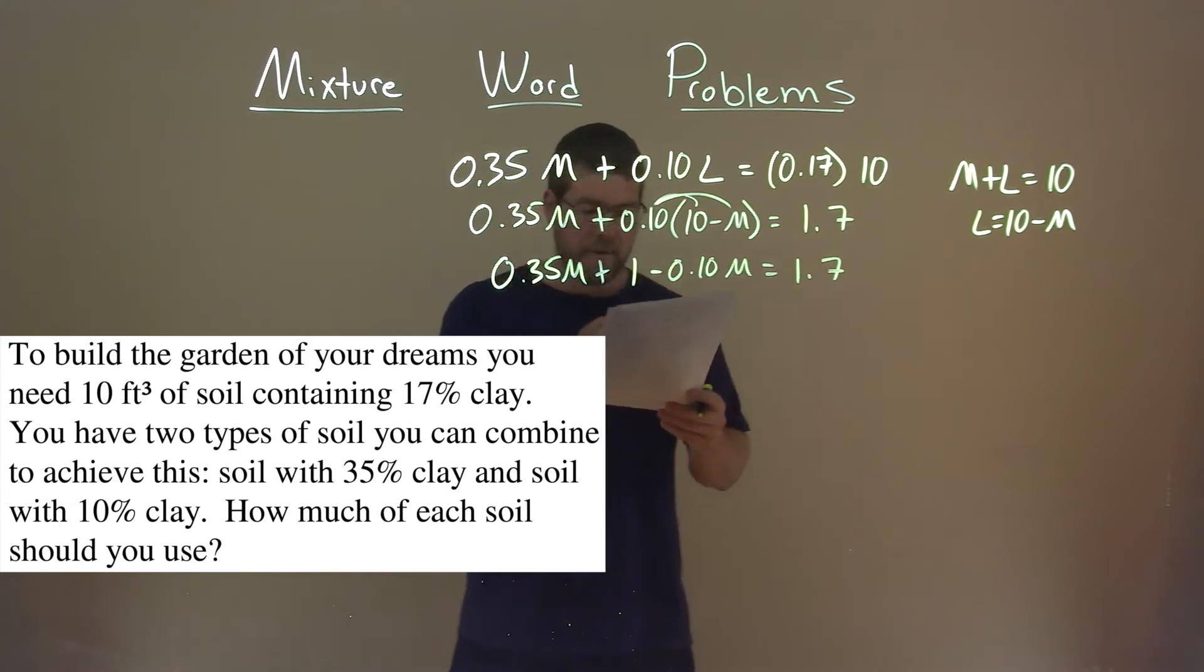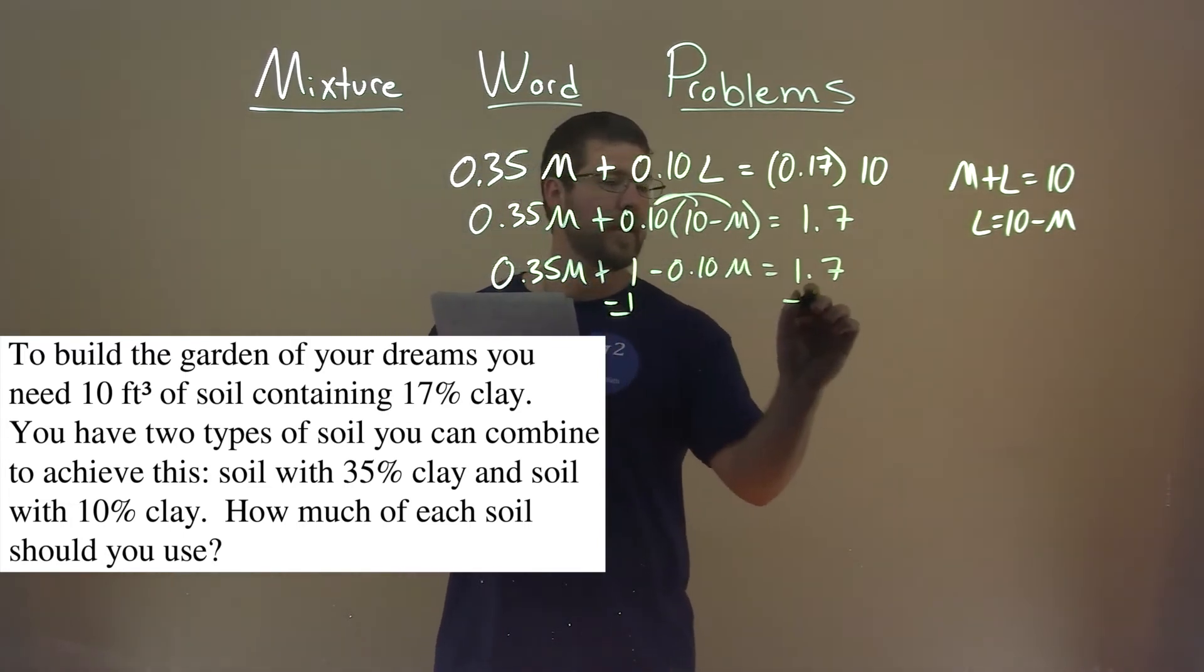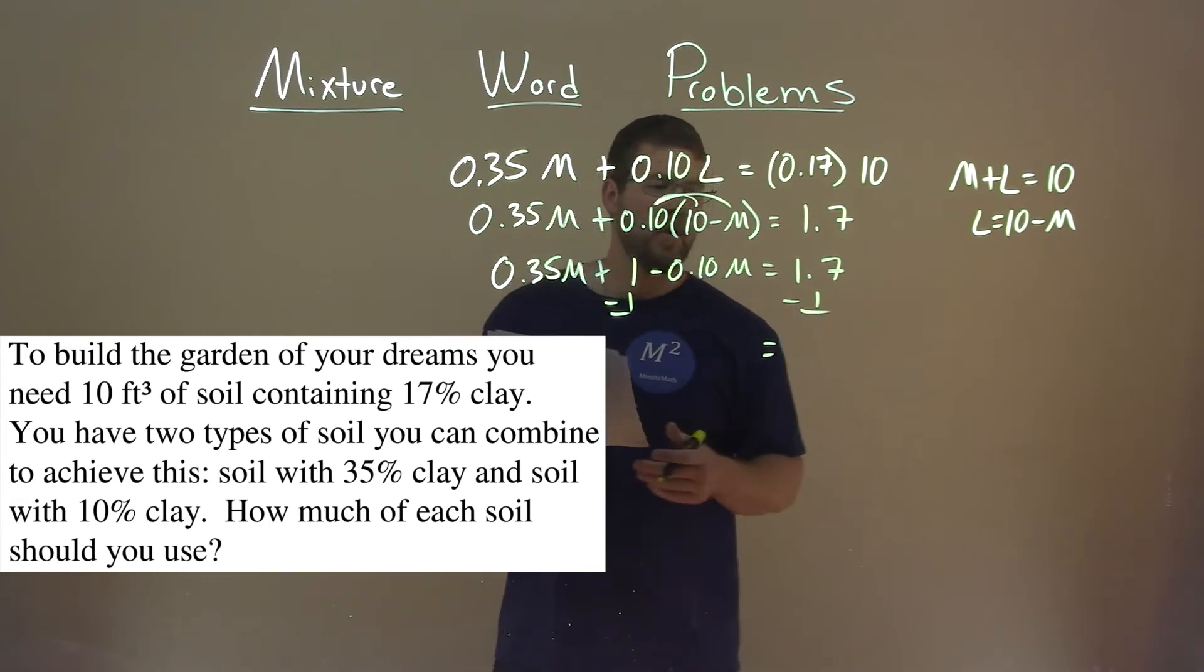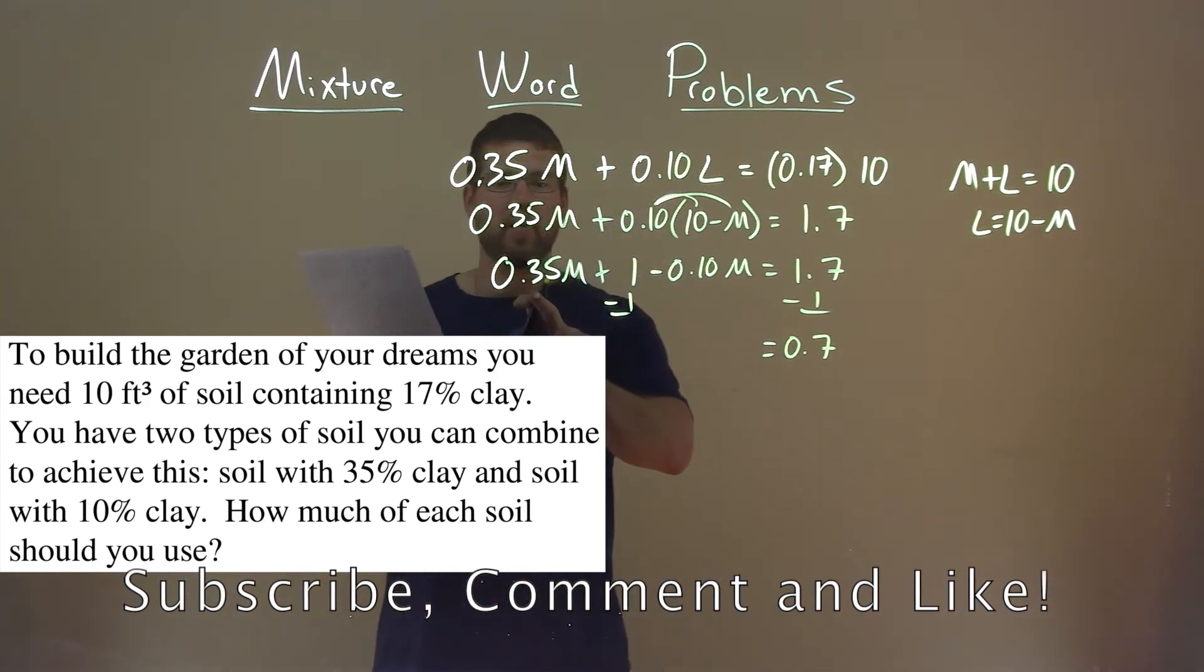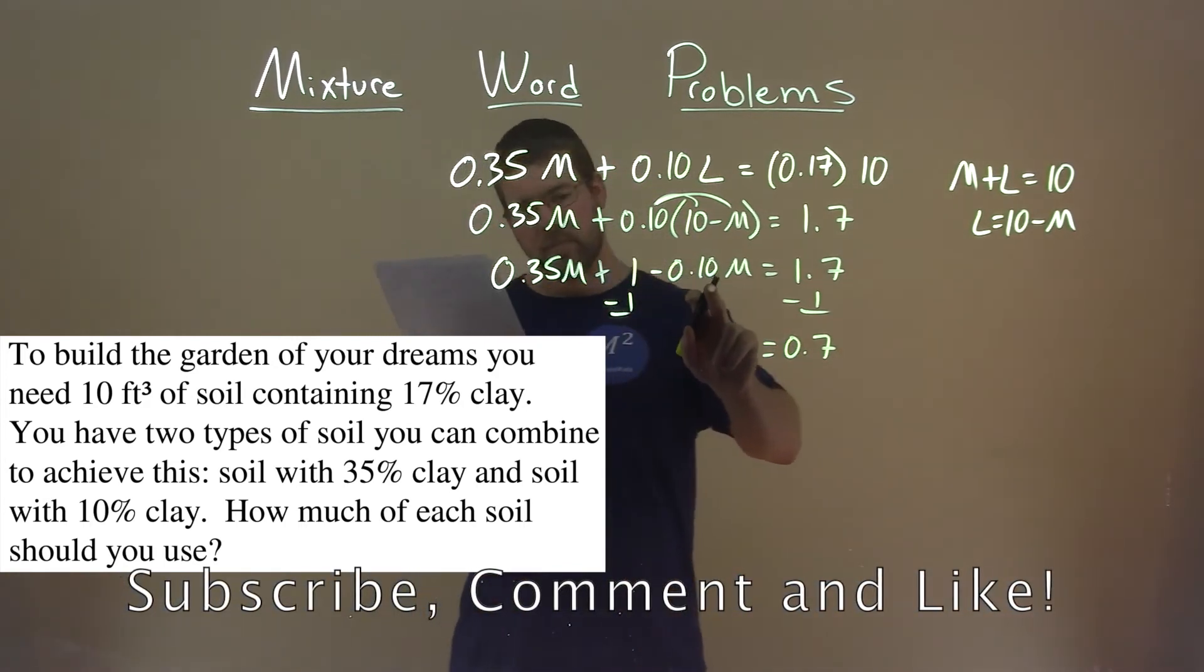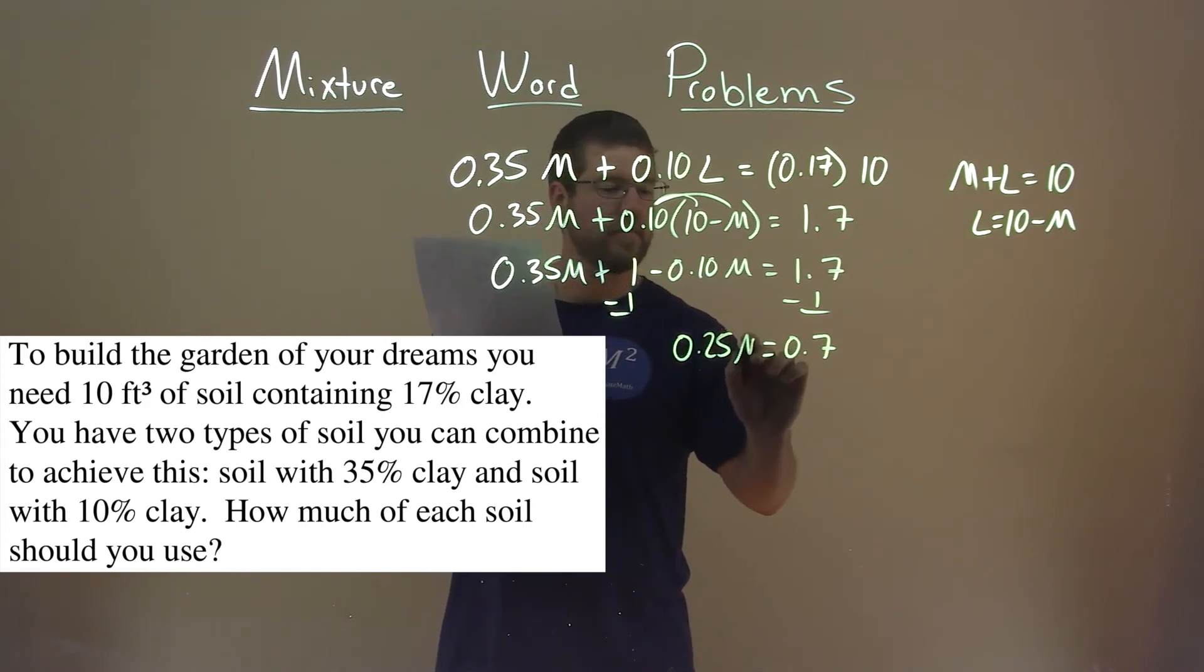So what are we going to do now? Well, let's combine our like terms. I'm going to bring a 1 over to the right-hand side, subtract 1. And 1.7 minus 1 is 0.7. So 0.35M minus 0.10M is 0.25M.